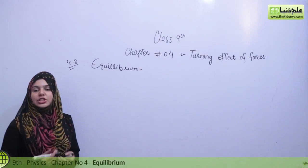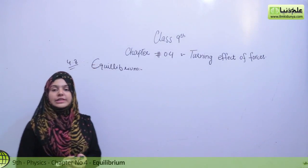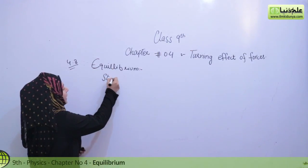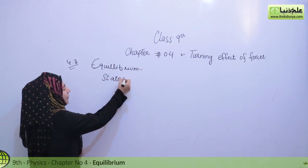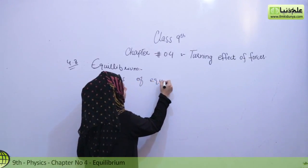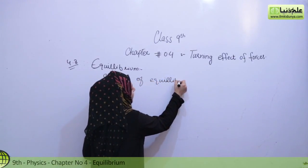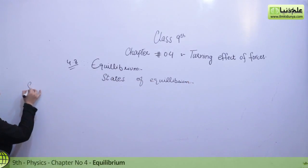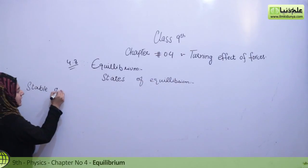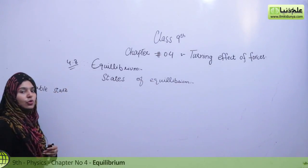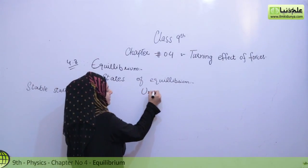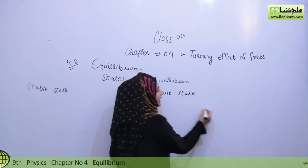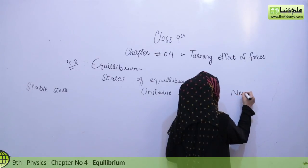We have studied the first and second conditions of equilibrium. Now, let's see that there are different states in equilibrium — when the body can stay in equilibrium. In the state of equilibrium, we have three states: number one is stable state, number two is unstable state, and the third one is neutral.